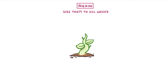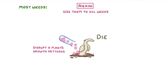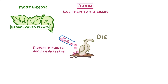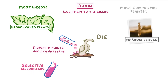The final use of auxins is that we can use them to kill weeds. This might sound counterintuitive, as auxins stimulate growth, but if you add enough of them it can completely disrupt a plant's growth patterns, which causes it to die. Most weeds are a type of plant called broad-leaved plants, whereas most commercial plants like cereals are narrow-leaved. This means we can develop selective weed killers that we can spray everywhere but that only kill the broad-leaved weeds.